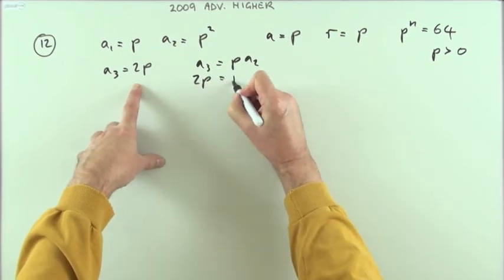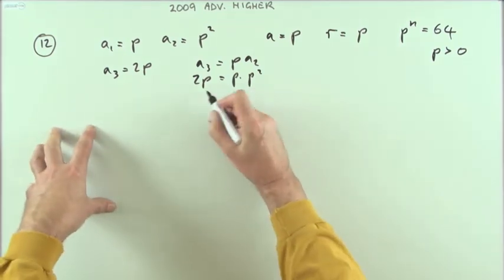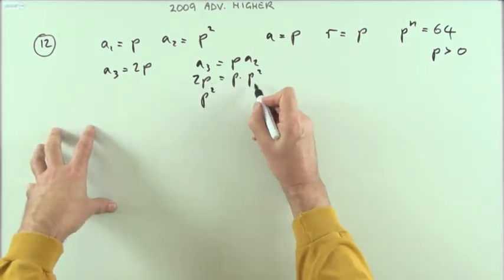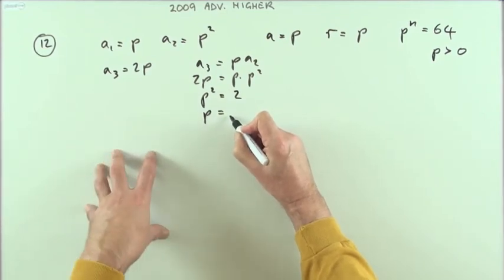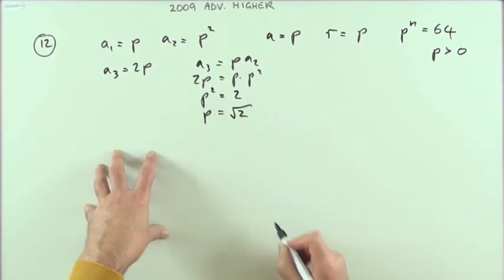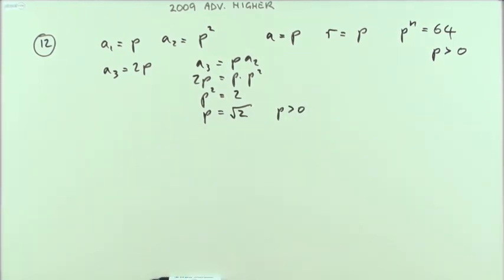In other words, 2p must be p times p^2. Canceling the p's, p^2 equals 2, so p equals √2. It could be ±√2, but it's just √2 since p is greater than zero.